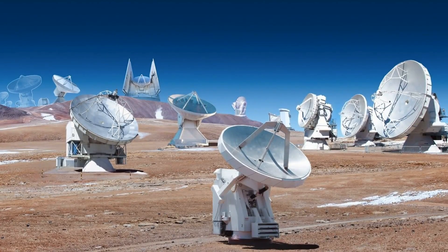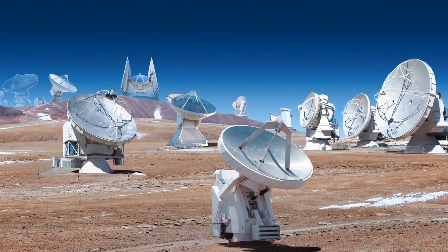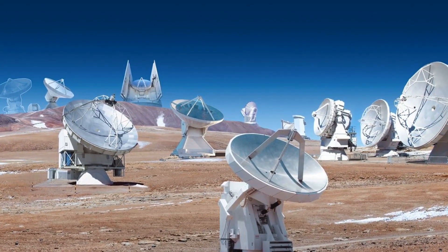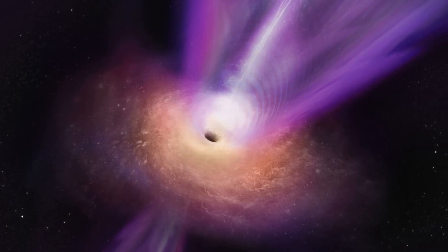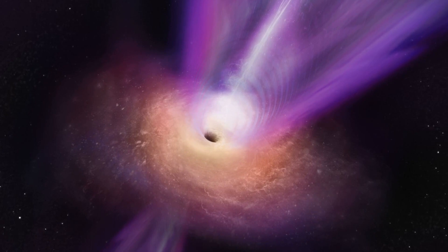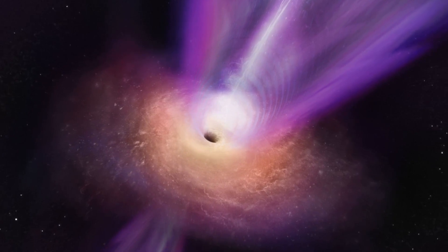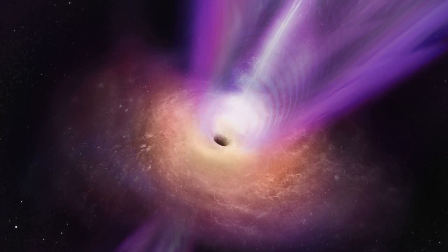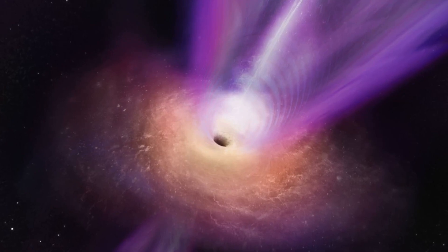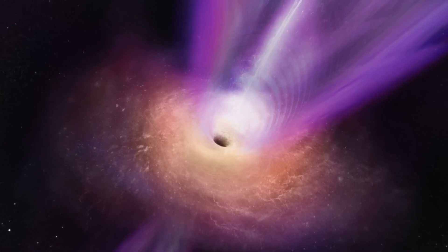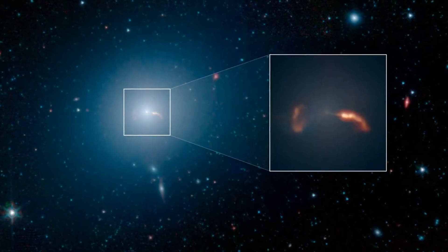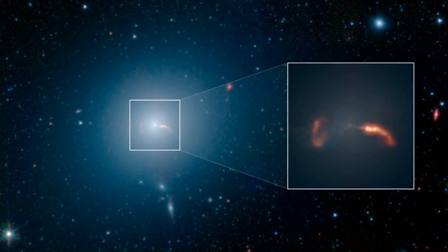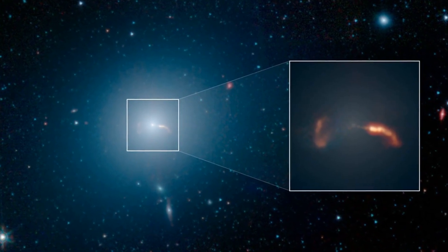The first image of a black hole was unveiled in 2019, thanks to the work of the Event Horizon Telescope, EHT, team. This remarkable achievement was accomplished by observing the black hole located at the heart of the M87 galaxy, focusing on the event horizon, the point where nothing, neither matter nor energy, can escape its gravity. This image portrays the rapid annihilation of light particles or photons, providing an unprecedented view of the phenomenon.